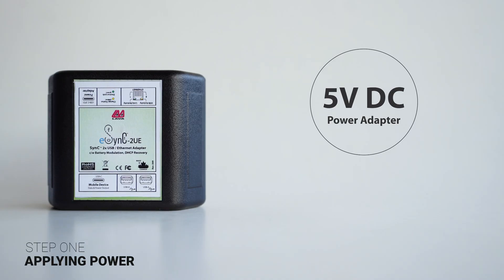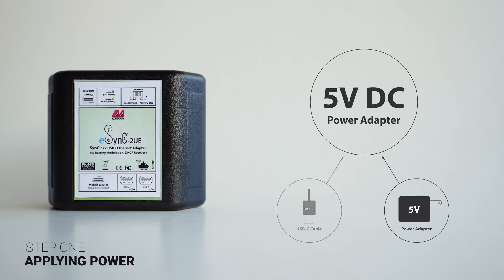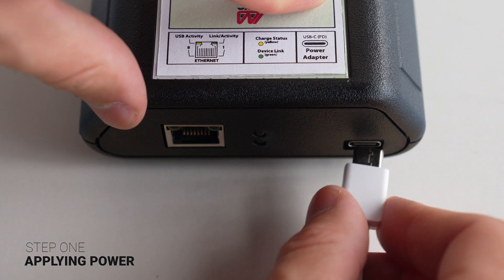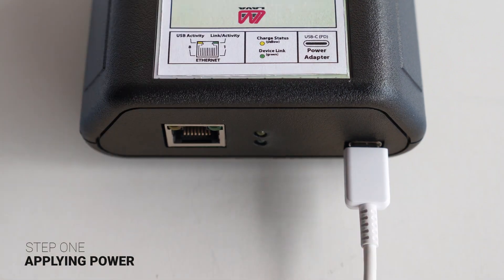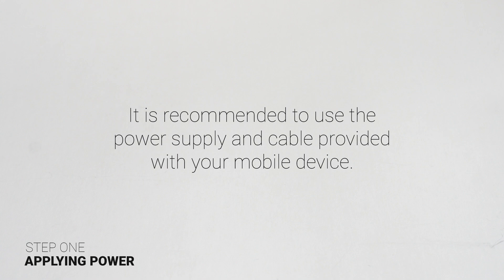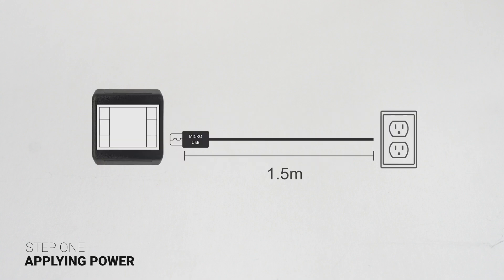5 volt DC power adapter: if you're using a 5 volt adapter, then the eSync can be powered using a 5 volt USB-C power supply plugged into the port labeled USB-C power adapter. Any power supply capable of providing 5 volts and 2 amps can be used, but it is recommended to use the power supply and cable provided with your mobile device. Using a standard 5 volt power supply allows you to place the adapter up to 5 feet or 1.5 meters from the power source.